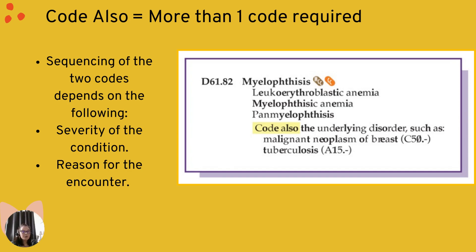Code also means more than one code is required. Sequencing of the two codes depends on the severity of the condition and the reason for the encounter. For example, under D61.82, it says code also the underlying disorder — such as malignant neoplasm of the breast (C50.-) or tuberculosis (A15.-) — with a dash indicating you need to add a more specific code. Please don't feel overwhelmed; when we get in and start coding, these things will make sense.